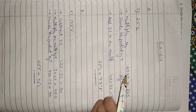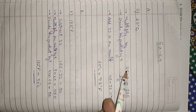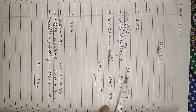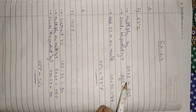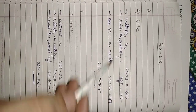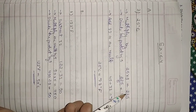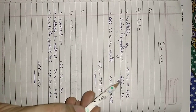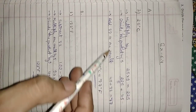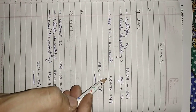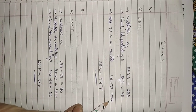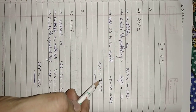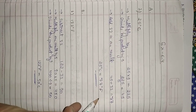First step: multiply the degree Celsius by 9. 25 times 9 equals 225. Second step: divide the product 225 by 5. After dividing by 5 we get 45. Third step: add 32 to the result. 45 plus 32 equals 77 degrees Fahrenheit.